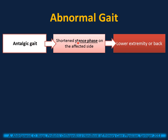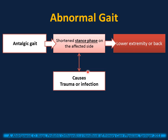Antalgic gait is a shortened stance phase on the affected side, due to pain anywhere in the lower extremity — hip, knee, ankle, or foot — or even the back. Two important causes of antalgic gait are trauma or infection.